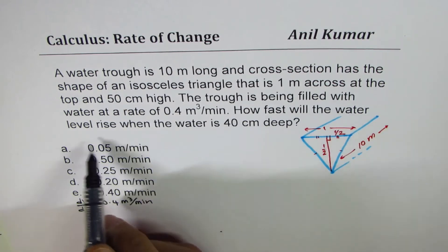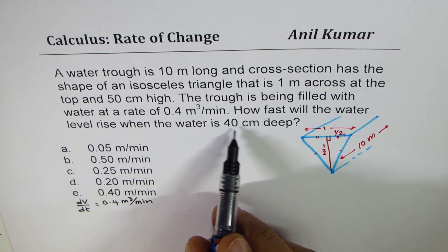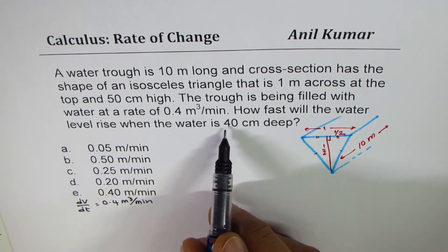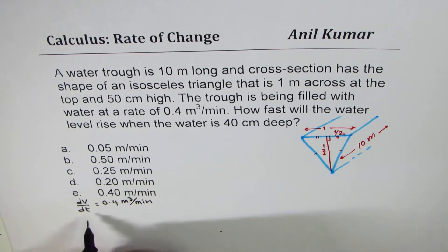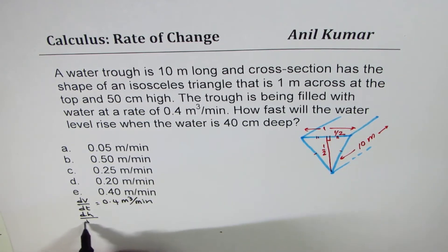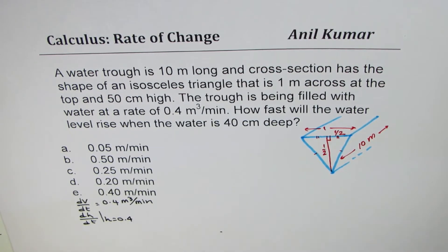How fast will the water level rise when water is 40 centimeters deep? That means 0.4 meters deep. So we want to find dh/dt when height is equal to 0.4. That is what the question is.